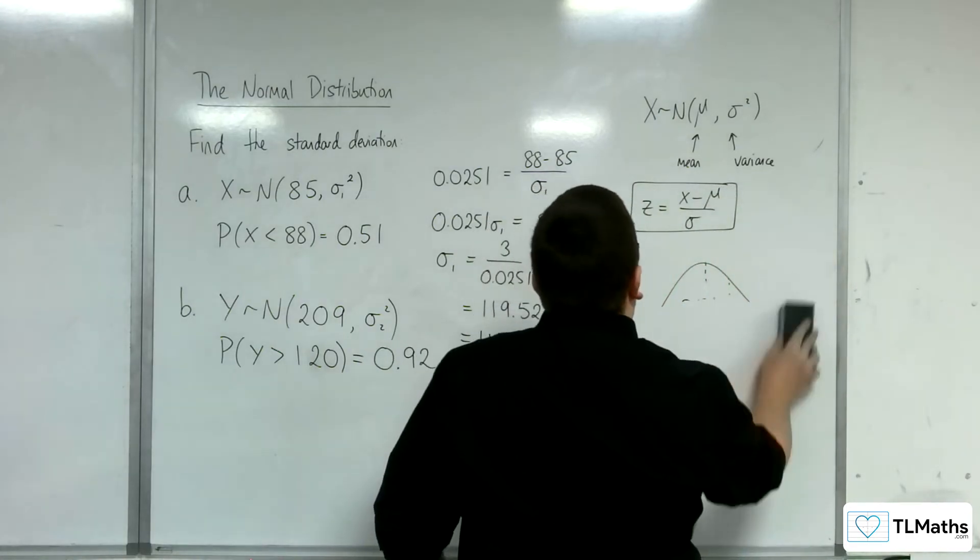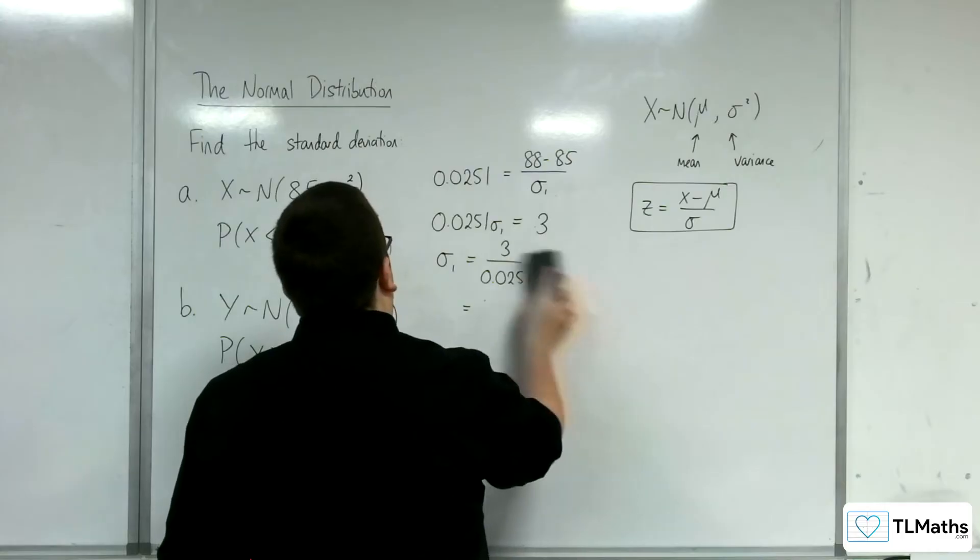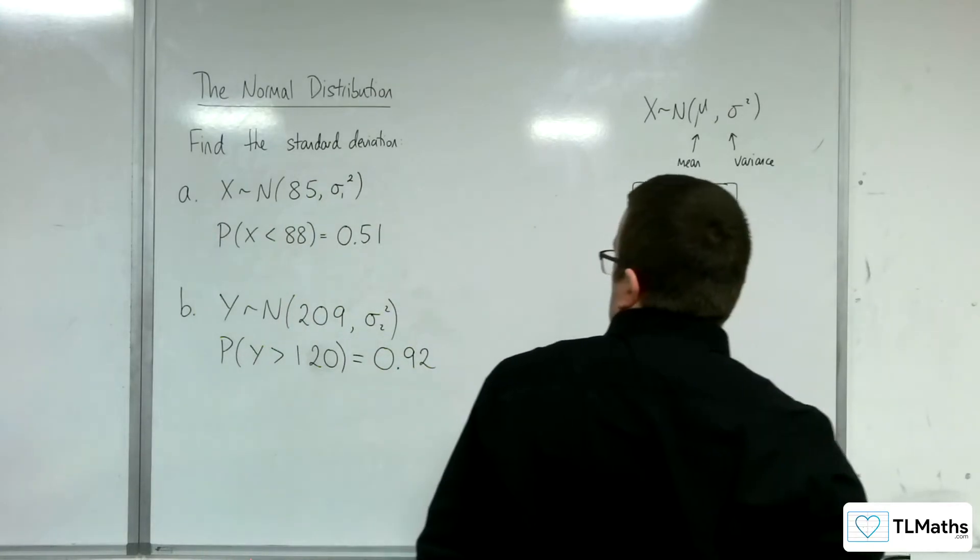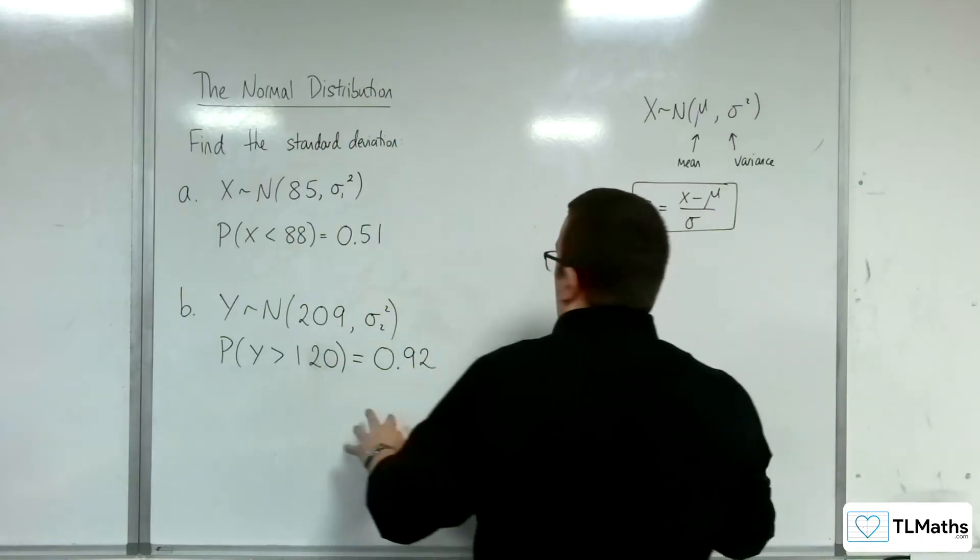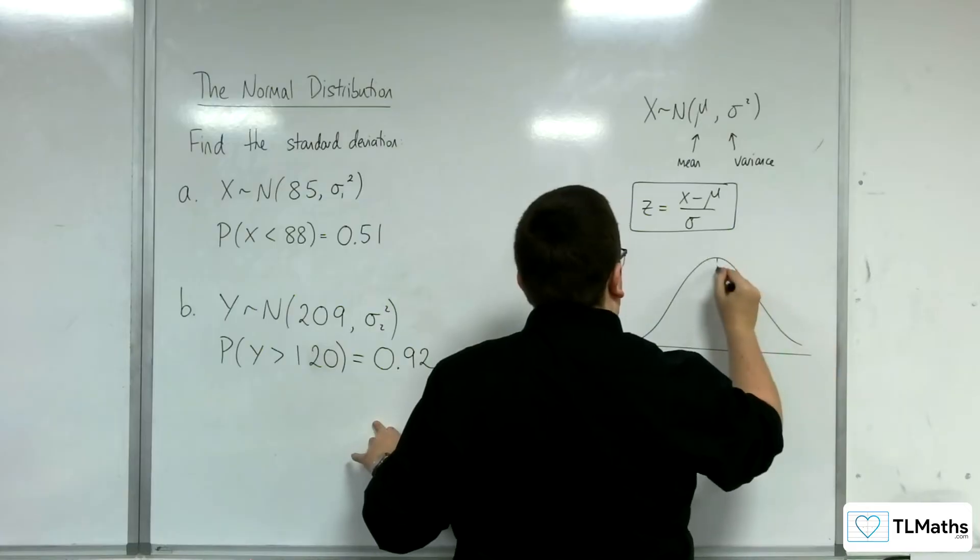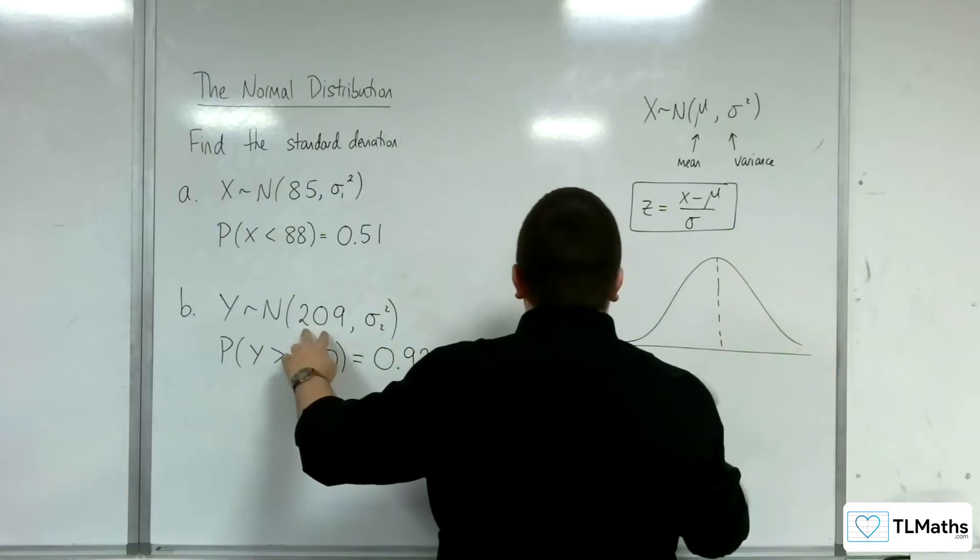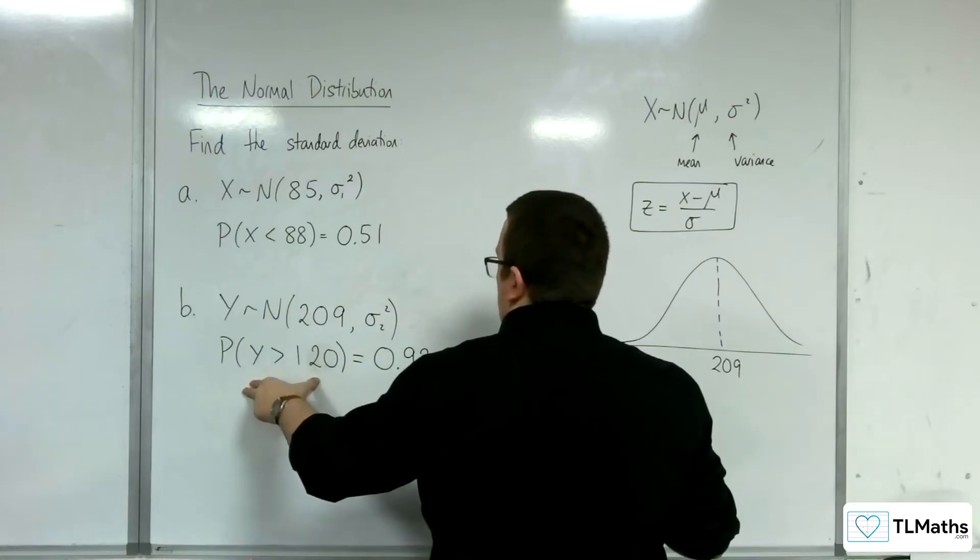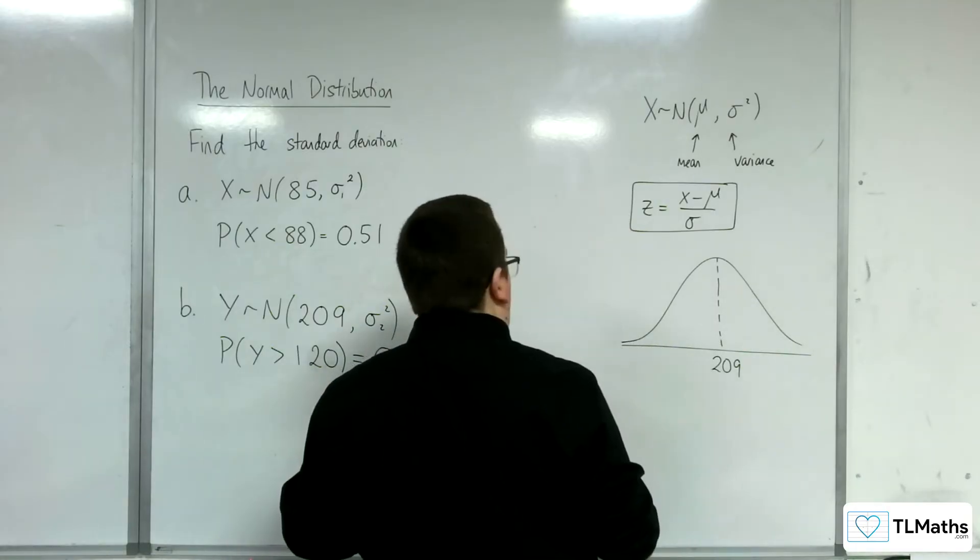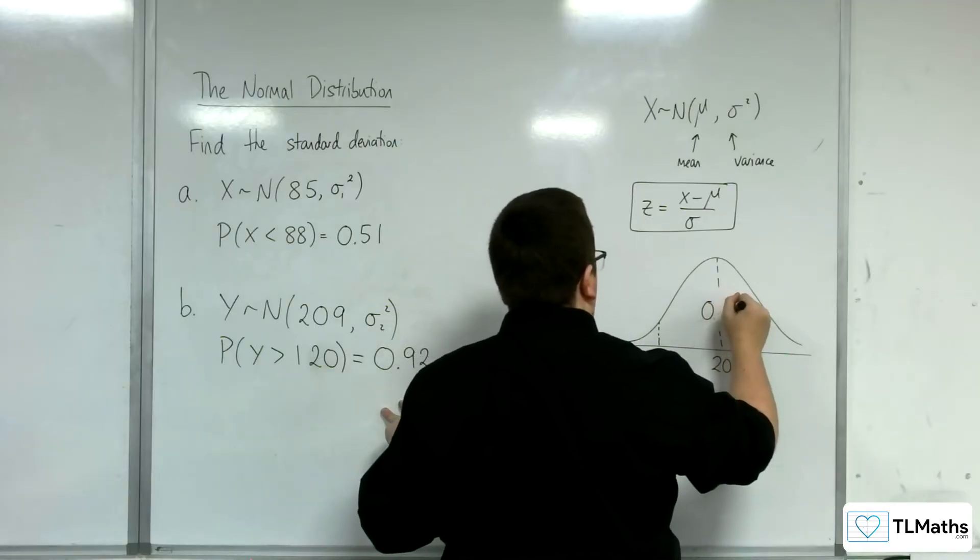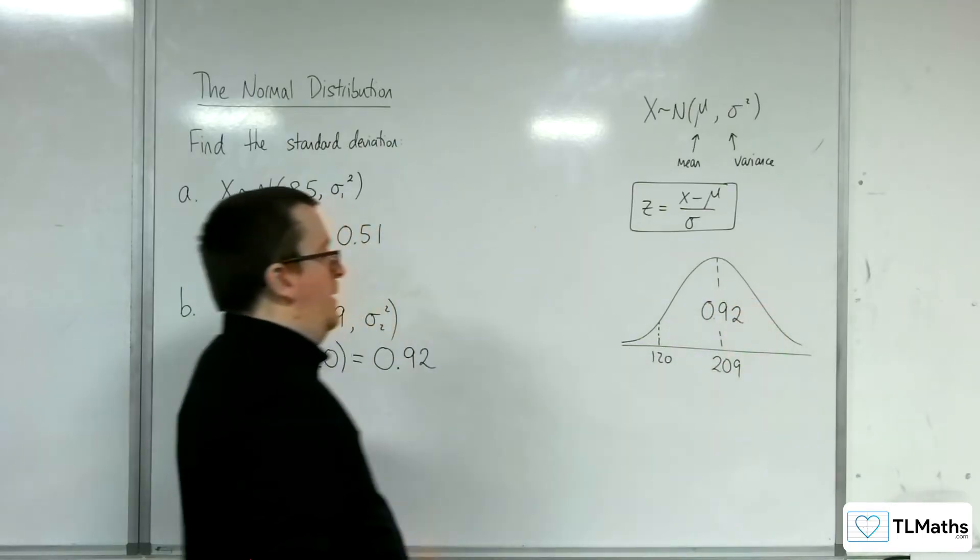Let's have a look at B. Let's draw a diagram first. The mean is at 209. To the right of 120 is 0.92. Well, 120 would have to be down here in order for this to be 0.92.